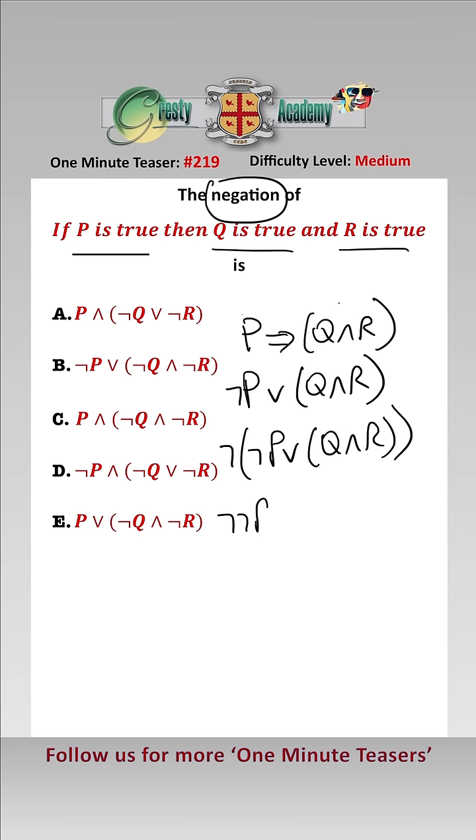Well, by De Morgan, that equals not not P and not Q and R.